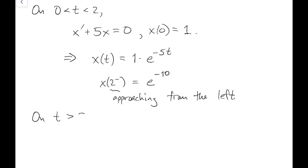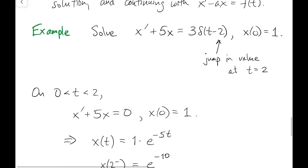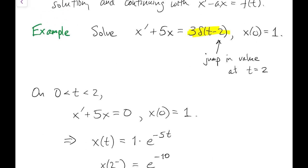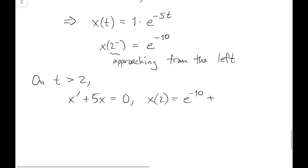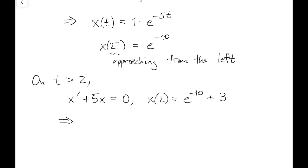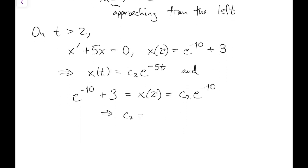The initial value of the next solution segment is just 3 greater than that left-sided limit, three greater because that's the multiplication of the delta. So we use that to find C2 in this segment. This is the right-sided limit at 2.